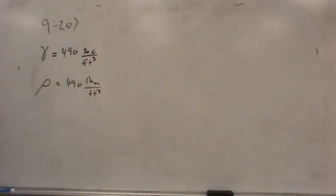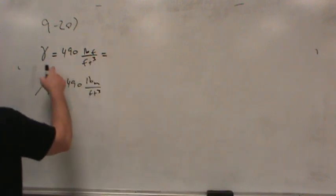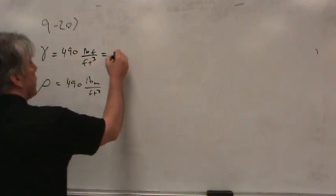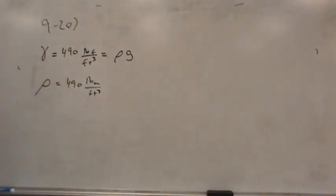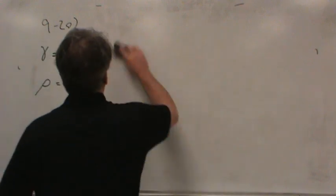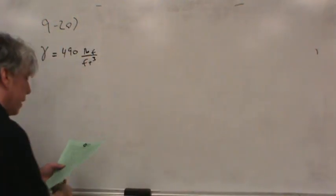Rho for this would be 490 pounds mass per cubic foot, and pounds mass and pounds force are two different things. How would we calculate specific weight from density? We take density and multiply it by the acceleration of gravity. Anyway, they gave us specific weight, so we don't really need density in this problem.